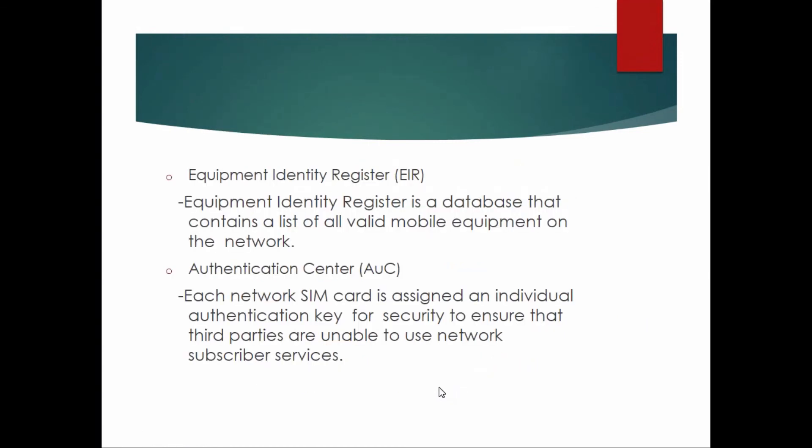EIR means Equipment Identity Register. It is a database that contains a list of all valid mobile equipment on the network. AuC, that means Authentication Center, provides security to ensure that third parties are unable to use network subscriber services.